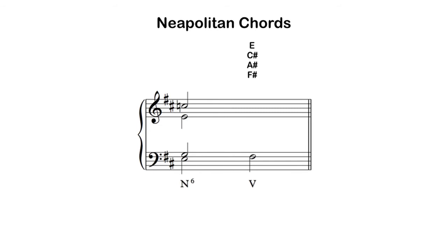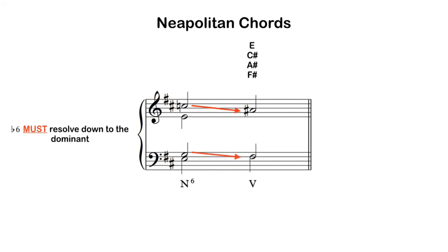Next I find the tendency tones. In the Neapolitan chord, the flat second scale degree — the Neapolitan scale degree — must resolve down to the leading tone. So my C natural has to go down to A sharp; there's no other way to resolve it. My other tendency tone is the lowered sixth scale degree, G, which wants to go down to scale degree 5. I find it in the tenor and make that step down to double the root of the dominant chord.